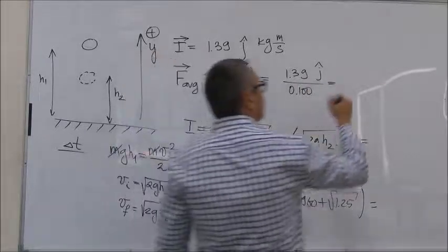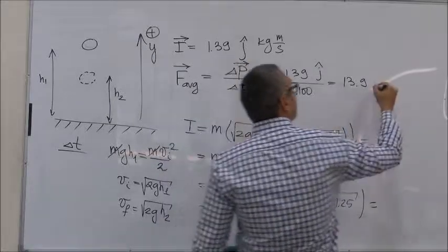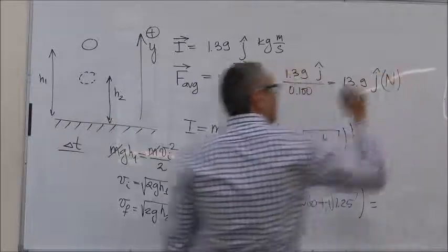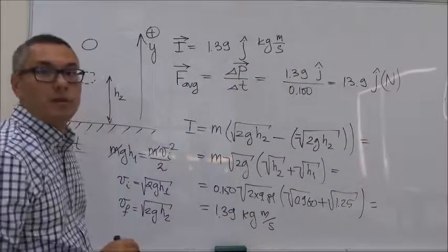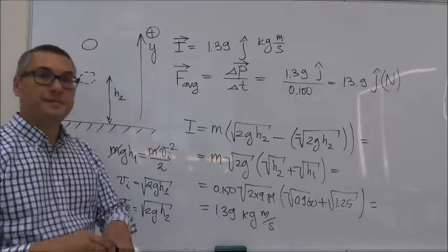So you get 13.9 unit vector J. The average force exerted on the ball by the floor, kilogram meter per second.